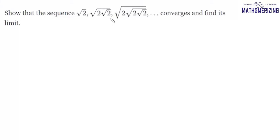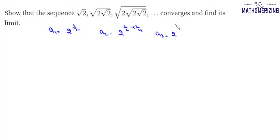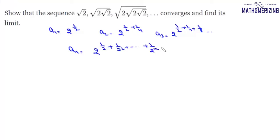The question is to show that the sequence √2, √(2√2), √(2√(2√2))... converges and find its limit. We observe that a₁ = 2^(1/2), a₂ = 2^(1/2 + 1/4), a₃ = 2^(1/2 + 1/4 + 1/8), so in general aₙ = 2^(1/2 + 1/2² + ... + 1/2ⁿ).